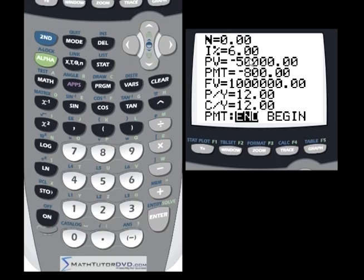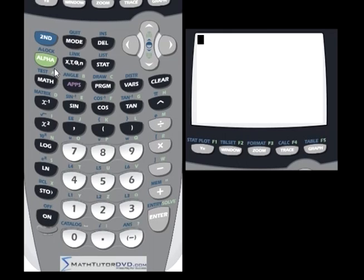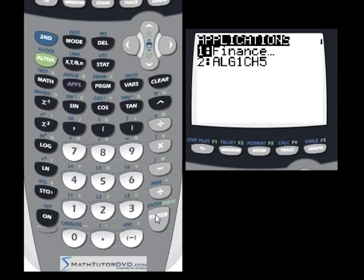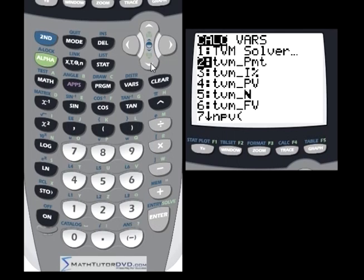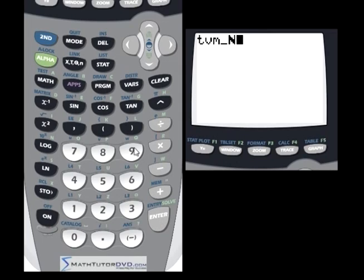We go up to our unknown variable, which is the number of payments it's going to take, and we hit alpha solve. We get a number of 342.67 months. If you're having trouble converting that to how many years, you just go into apps, finance, and go down to TVM N. This is going to be automatically stored with the last value of N that we calculated, and we just divide by 12 because there's 12 months in a year. The answer is 28.56, 28 and a half years basically.